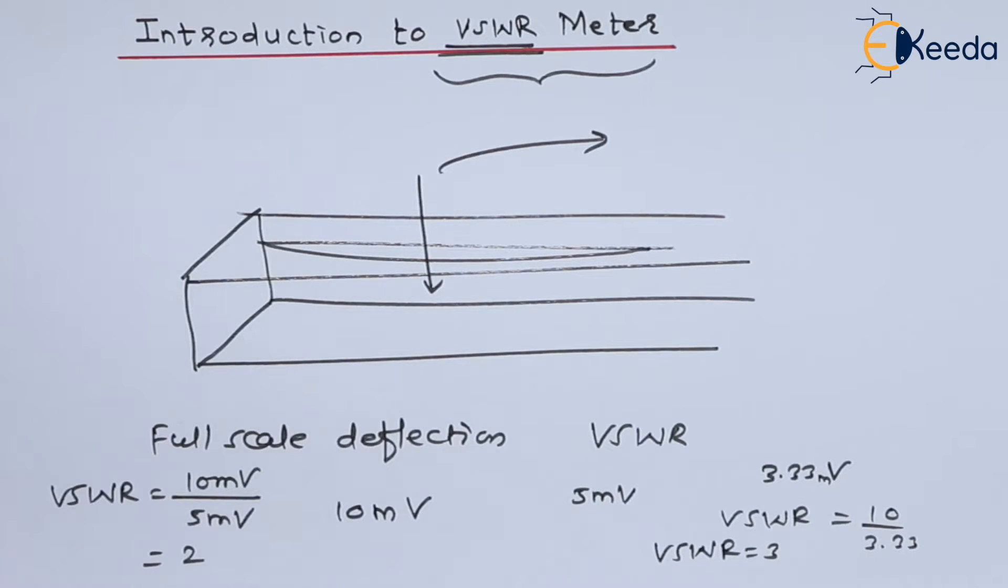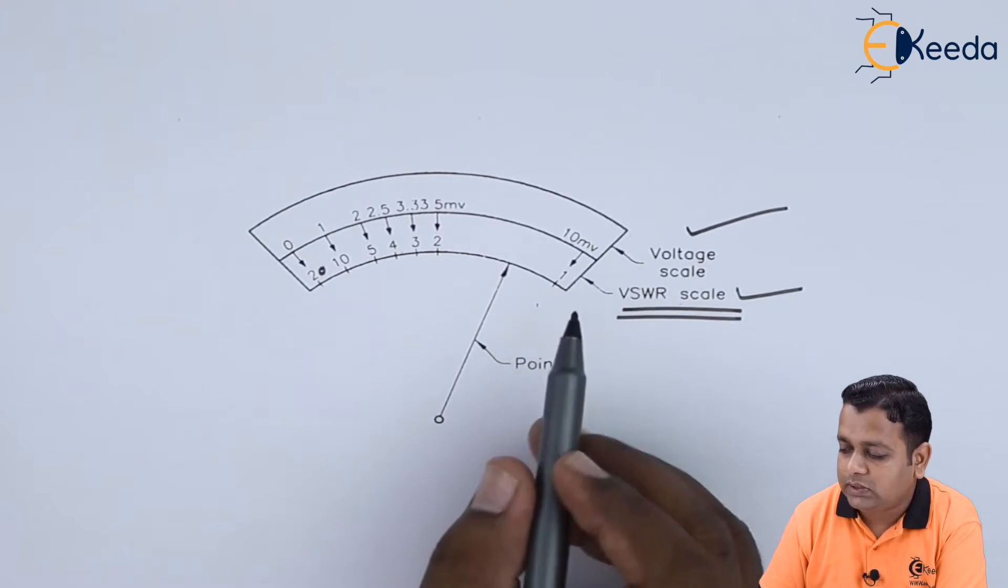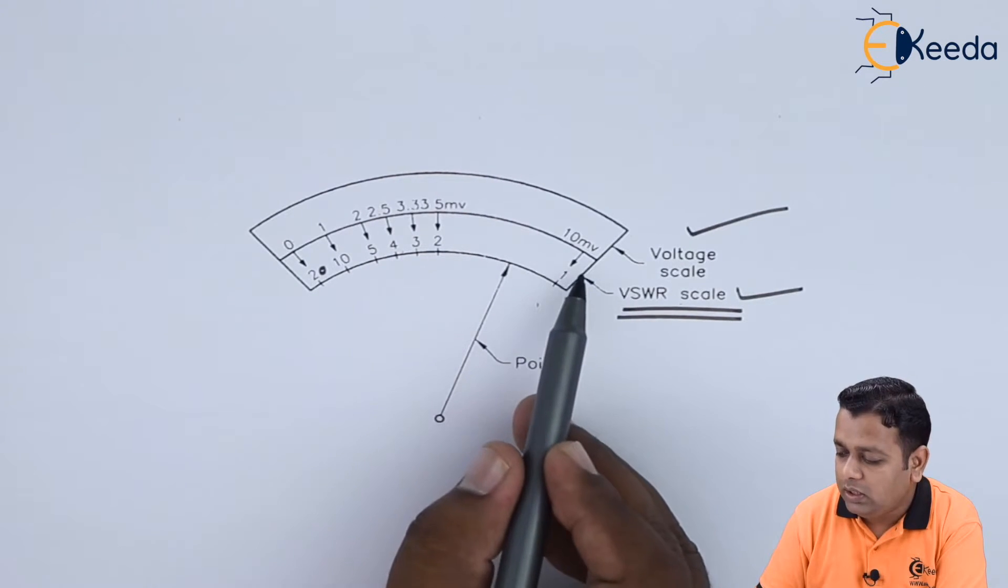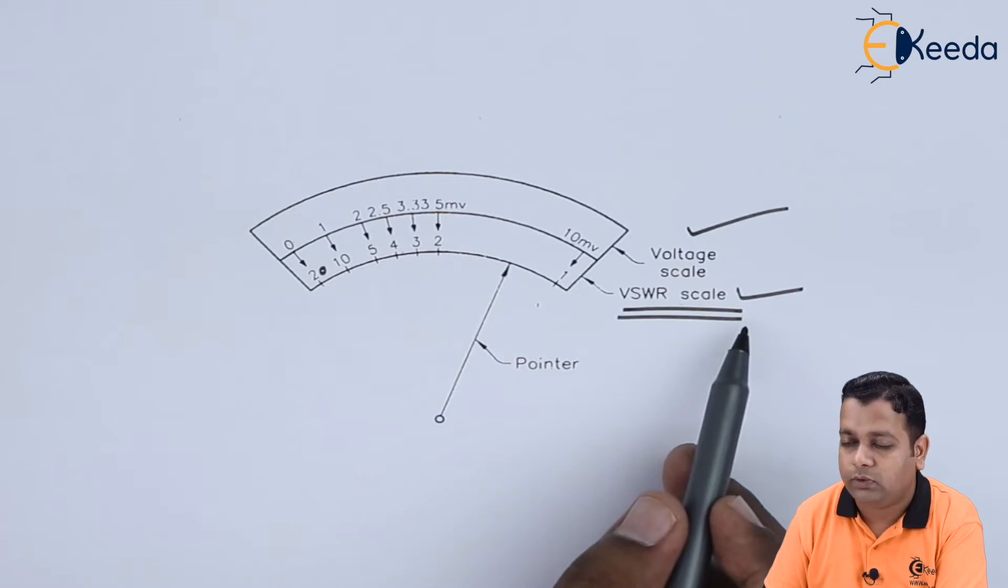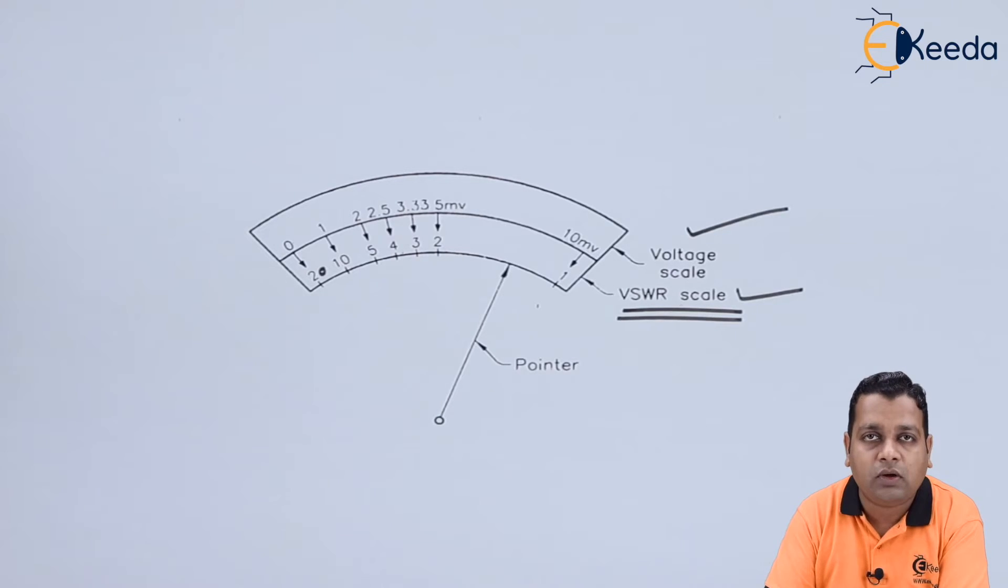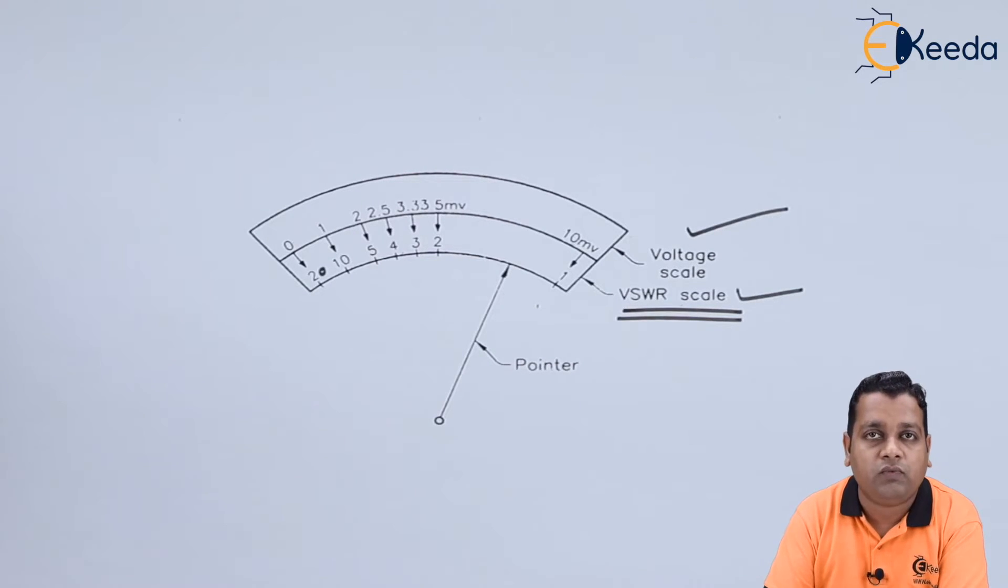If we have the measurement obtained with the help of the tunable detector equal to 2.5 millivolts, the VSWR will of course be of value 4. So this way into the earlier schematic diagram, the maximum value of the voltage scale that has been shown 10 millivolts will be related to the measurements of the VSWR scale. Basically on to the VSWR meter, both the types of the scales are provided so you can directly have the measurement of VSWR calculated there.